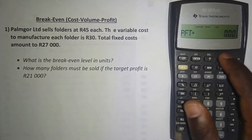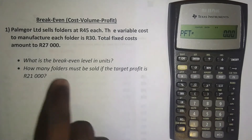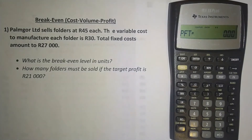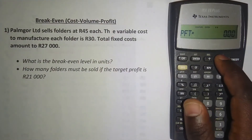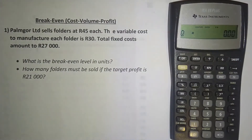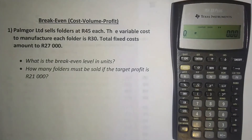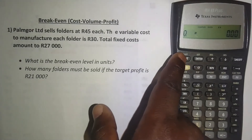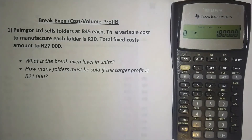Press the downward arrow and it asks for the profit. For the first question we want the break-even level in units, and we know that break-even means you are neither making a profit nor a loss — so we have no profit. Leave it at zero and press the downward arrow again. We want the quantity, because we are asked what the break-even level in units is.